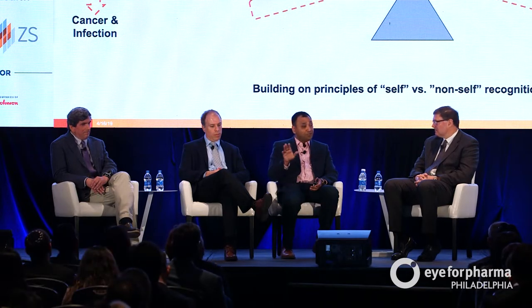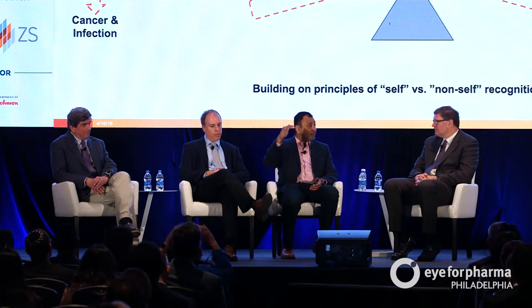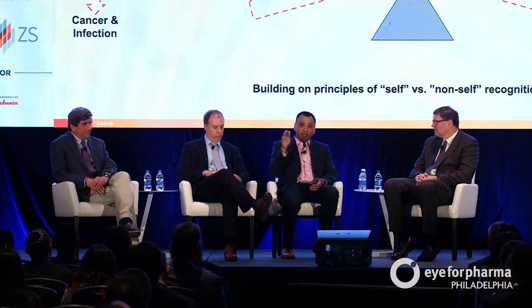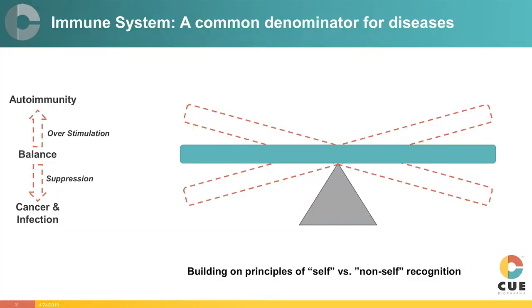We've looked at this paradigm from a very simple principle that the system follows, which is self versus non-self discrimination. That's the essential decision the immune system has to make at the highest level when it encounters a signal. Autoimmune diseases is essentially inappropriate recognition of self as non-self. Susceptibility to cancers or infections is inadequate recognition of something that's foreign that you should react to. That's a fundamental principle, and the reason I focus the entire R&D organization on that is if we understand it, it gets us to the why, not the what.